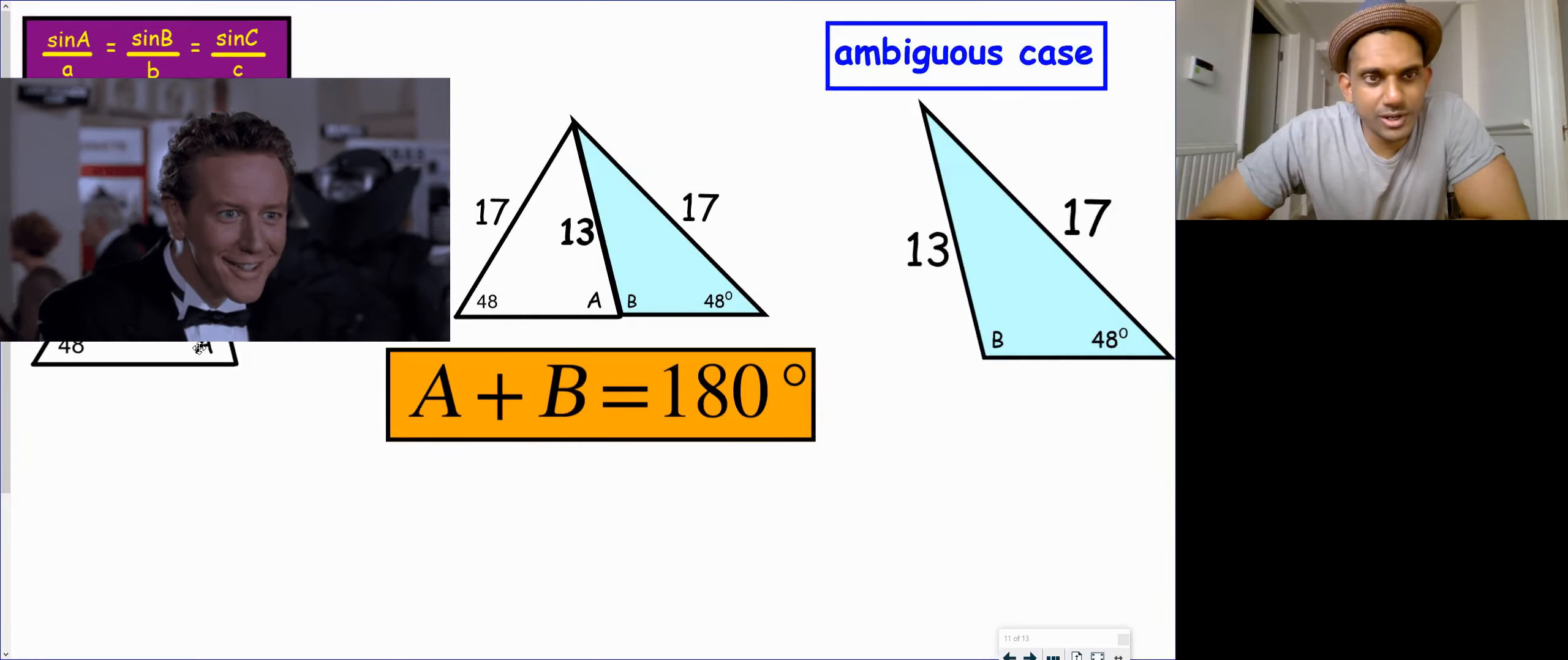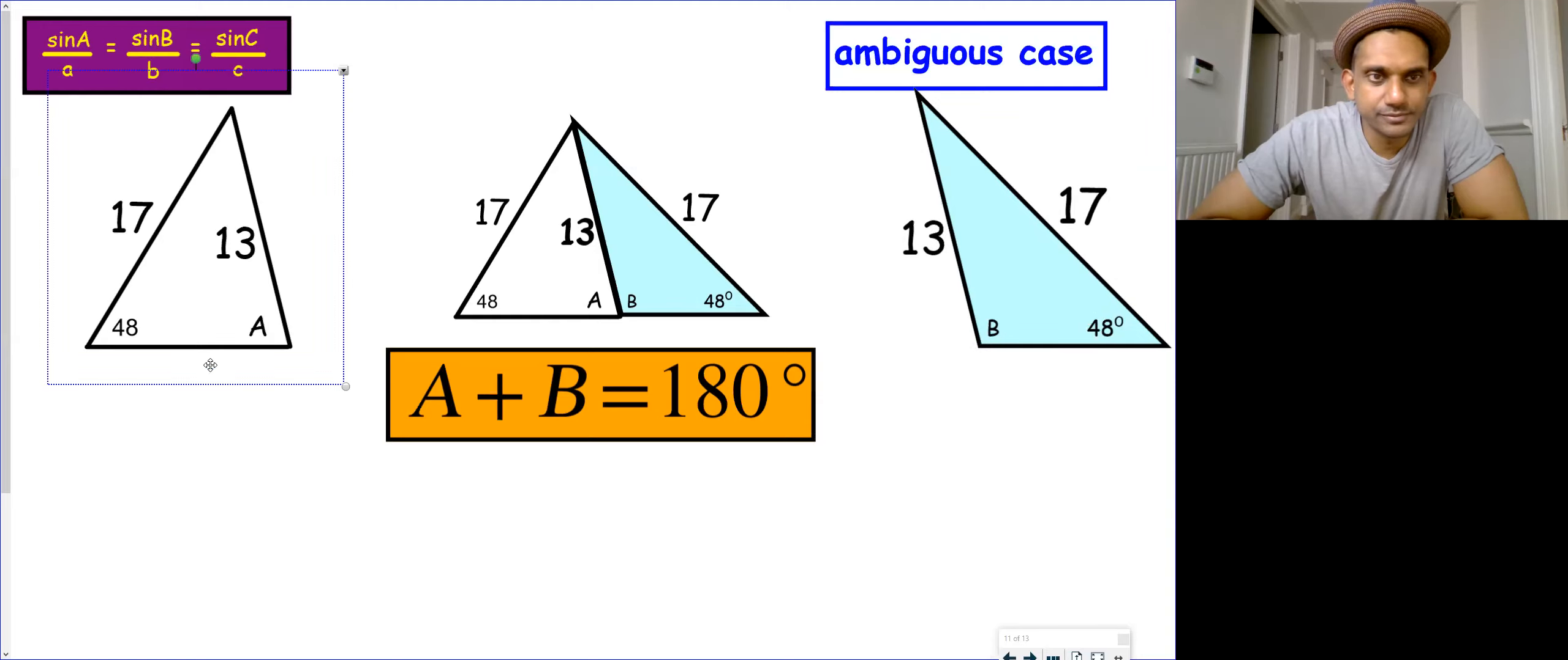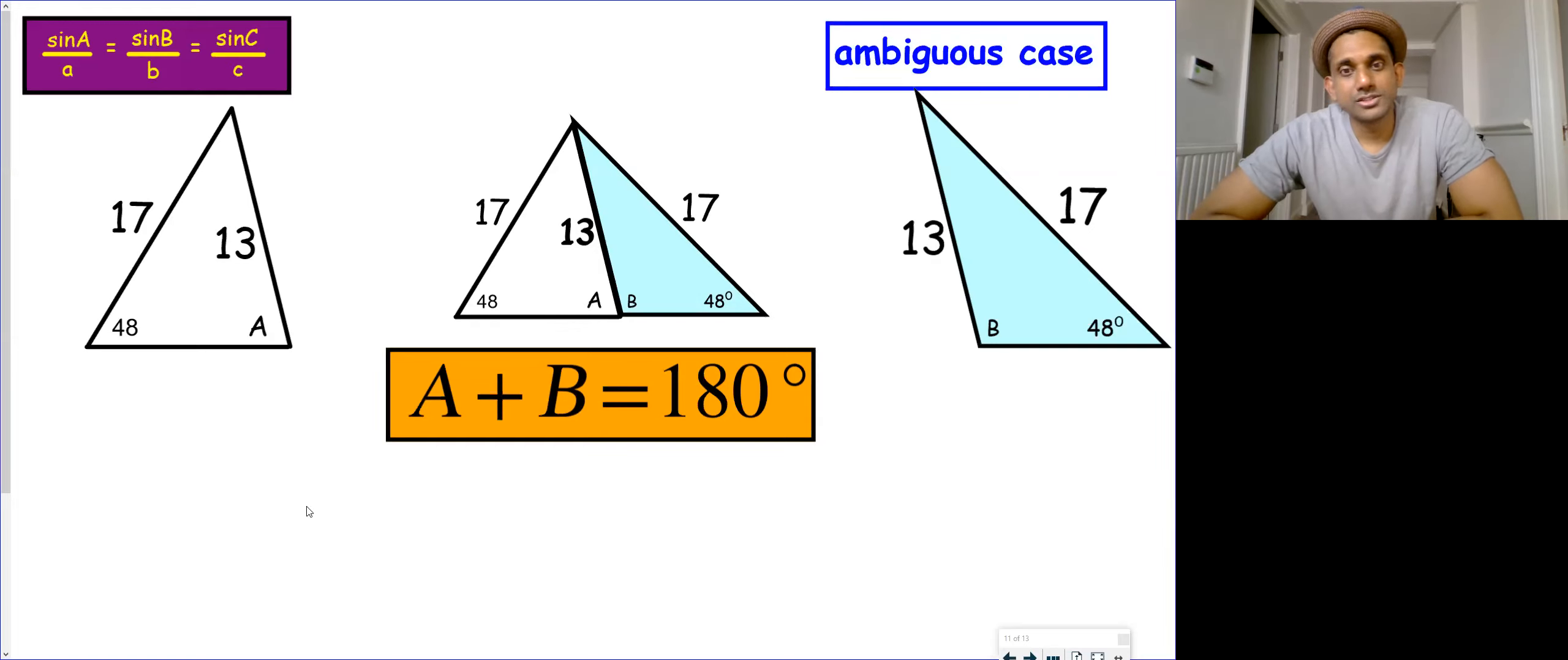Now, if we look at triangle A, angle A and angle B, which one is the acute angle? Angle A agreed. So that means that if that is the acute angle, do we agree that B must be 180 minus the 76 we found just a second ago? Yeah. So A is 76, but B will be 104 degrees. I hope that makes sense.